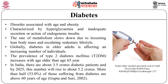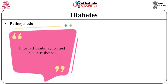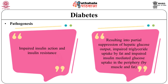In India, there are about 3.5 crore diabetic patients and by 2025, this number will rise to about 5.2 crores. More than half of those suffering from diabetes are above 60 years of age. The earliest defect in the pathogenesis of type 2 diabetes is impaired insulin action and insulin resistance, which results in partial suppression of hepatic glucose output, impaired triglyceride uptake by fat and impaired insulin-mediated glucose uptake in the periphery.